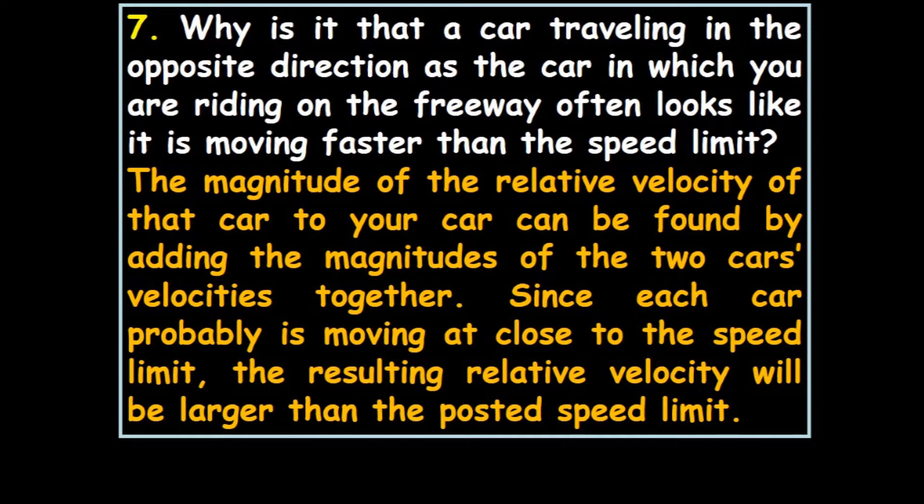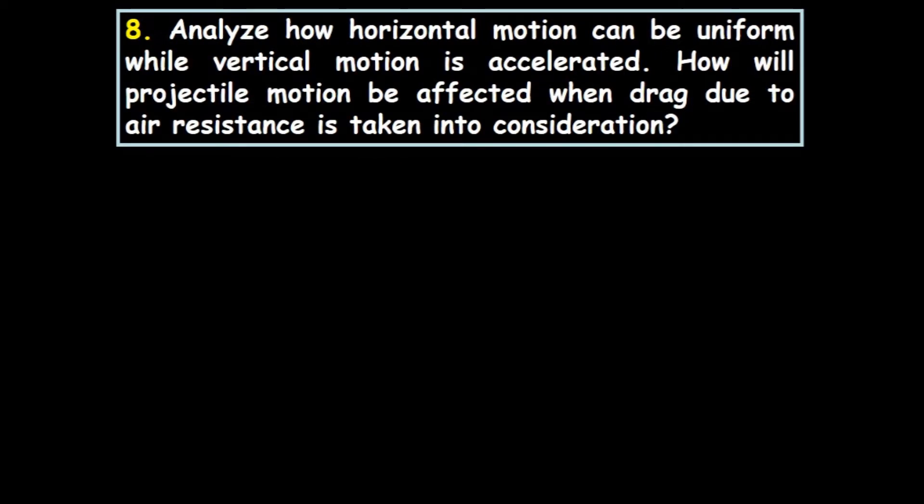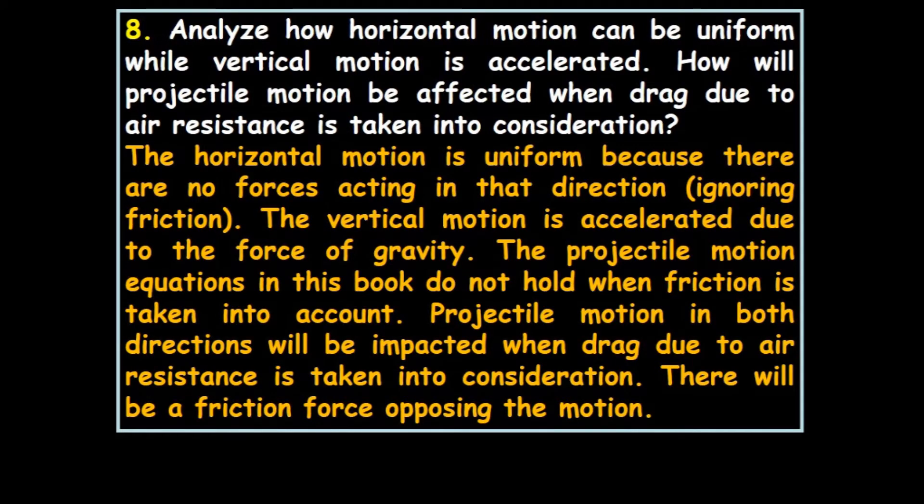Analyze how horizontal motion can be uniform while vertical motion is accelerated. The horizontal motion is uniform because there are no forces acting in that direction, ignoring friction. The vertical motion is accelerated due to the force of gravity. The projectile motion equations in this book do not hold when friction is taken into account. There will be a friction force opposing the motion in ballistics.